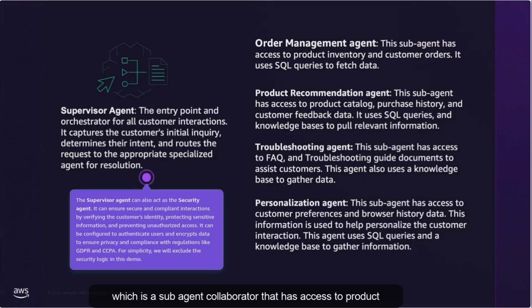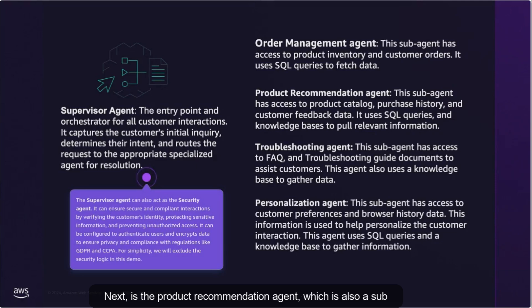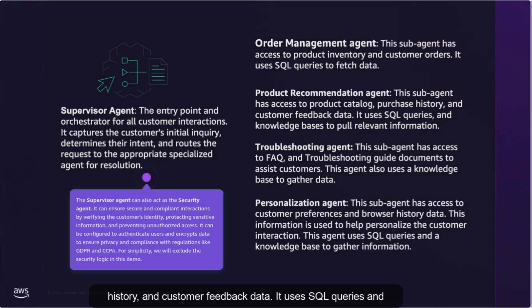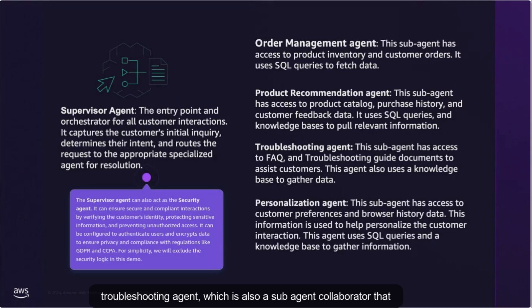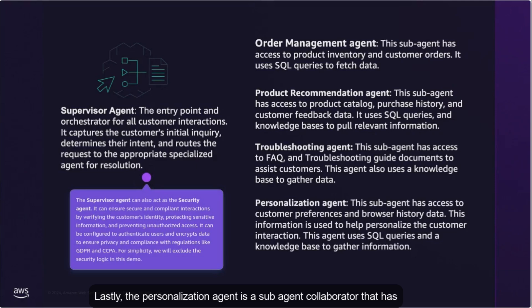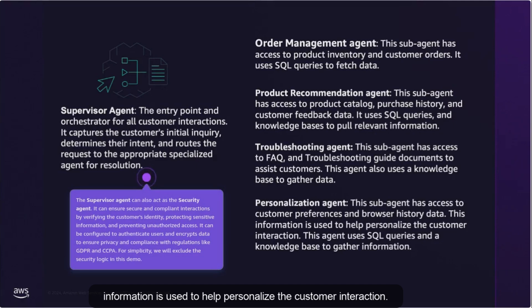Next is the order management agent, a sub-agent collaborator that has access to product inventory and customer orders — it uses SQL queries to fetch data. Next is the product recommendation agent, also a sub-agent collaborator with access to product catalog, purchase history, and customer feedback data, using SQL queries and knowledge bases to pull relevant information. Next, we have the troubleshooting agent, a sub-agent collaborator with access to FAQ and troubleshooting documentation, also using a knowledge base. Lastly, the personalization agent is a sub-agent collaborator with access to customer preferences and browser history data, using SQL queries and a knowledge base to gather information.